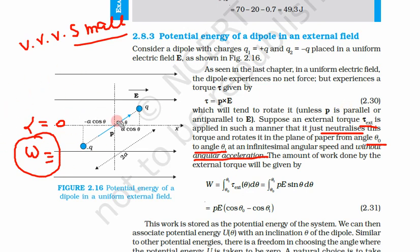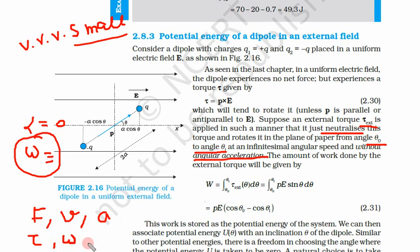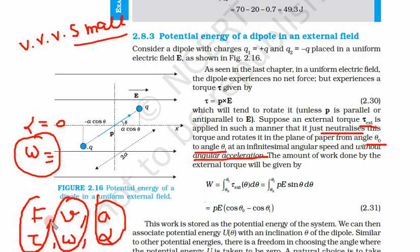Similar to that example, force is replaced by torque τ, linear velocity is replaced by angular velocity, and linear acceleration is replaced by angular acceleration. Both angular velocity and angular acceleration are very small or zero — the external torque only cancels the effect of the natural internal torque, just as the external force cancelled the electrostatic force.